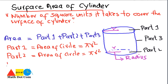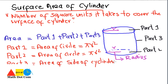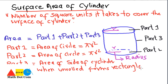Now the last part is part 3, which is different from them because part 3 is the area of the side of the cylinder. When unrolled, the side forms a rectangle. When we unroll the cylindrical shape, we get a rectangle. One important thing we have here is the height h of the cylinder. So we have two key measurements: the radius r and the height h.